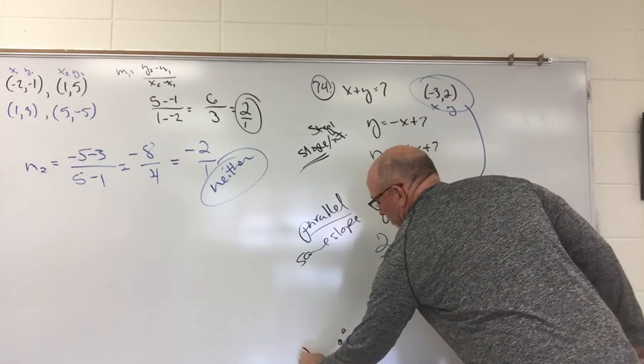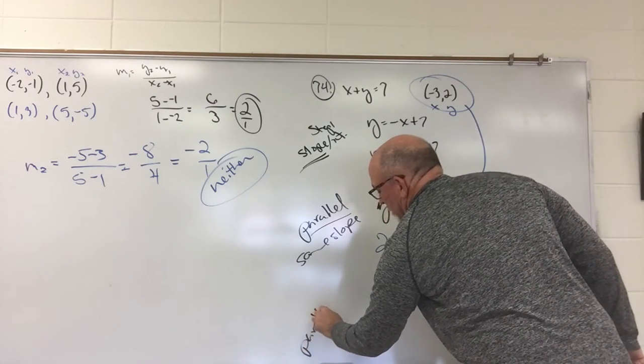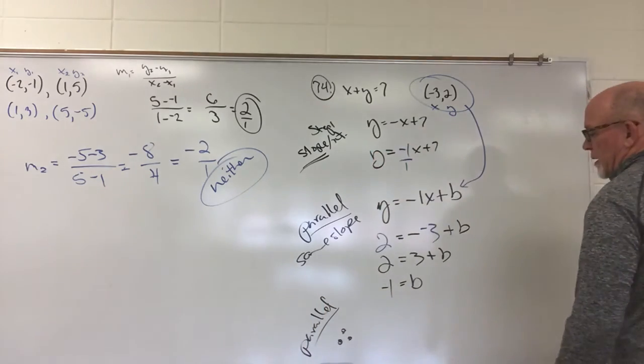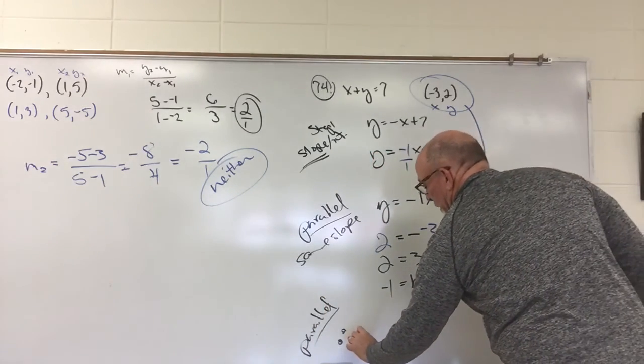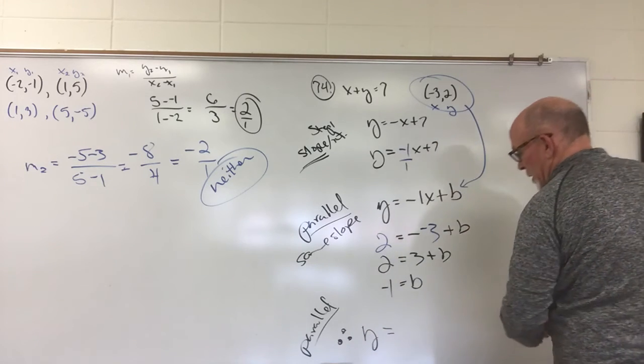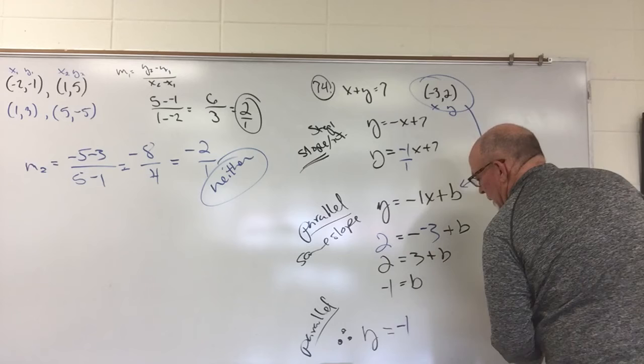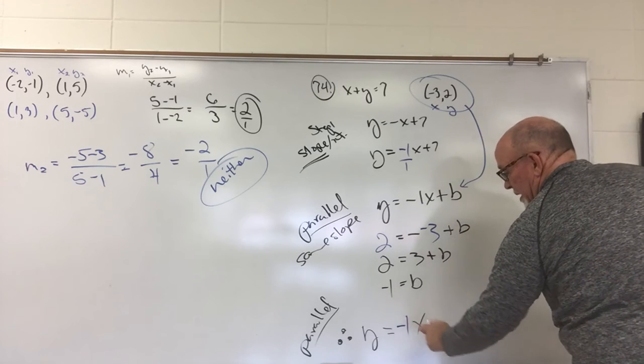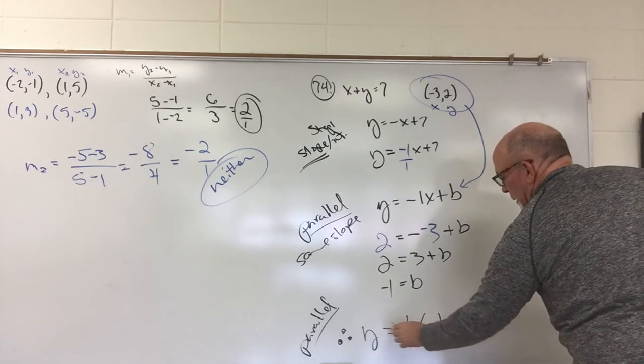Therefore, for parallel, for the parallel scenario, our line that's going to be parallel is y equals, our original slope of the line that was parallel was a negative 1x. And, then our b for the parallel line is negative 1.